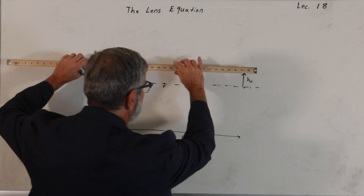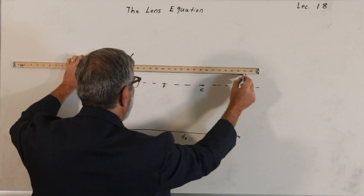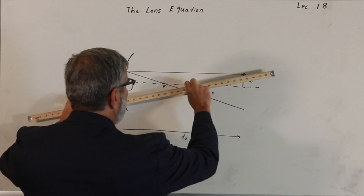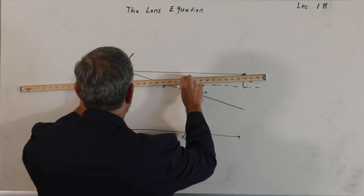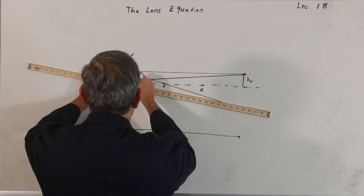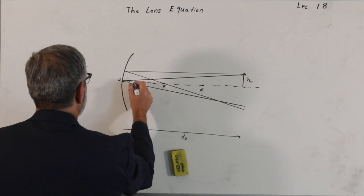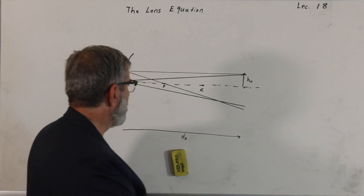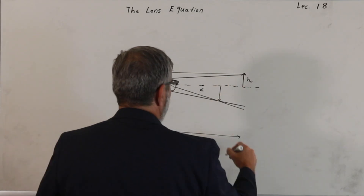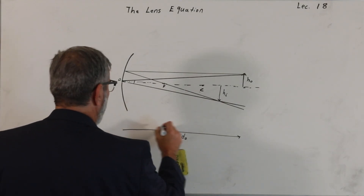Let's see where the image is going to form. Let's construct a ray parallel to the optic axis — we know that's going to pass through the focus. Let's also consider a ray that reflects at the pole. Under the law of reflection, this angle and this angle are the same. This point will be the image plane, and I get an image of height h_i at a distance d_i from the pole.